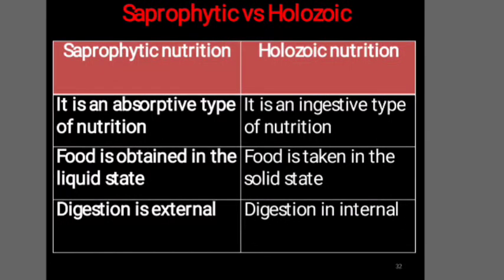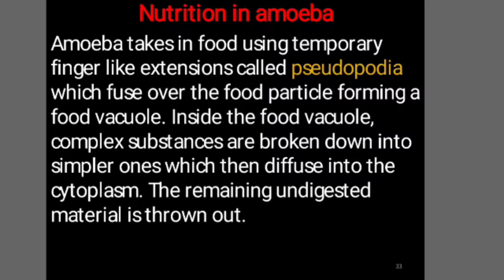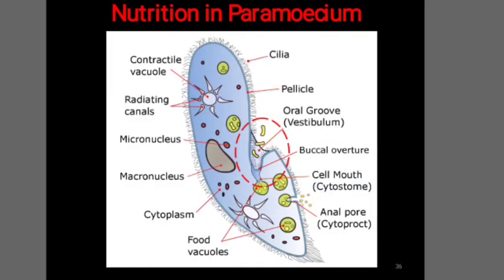You can see the difference between saprophytic and holozoic mode of nutrition. Nutrition in amoeba takes place with the help of pseudopodia, which fuse over the food particle forming a food vacuole. Inside the food vacuole, complex substances are broken down into simpler ones which then diffuse into the cytoplasm. The remaining undigested material is thrown out. In paramecium, which is a unicellular organism, the cell has a definite shape and food is taken in at a specific spot, moved there by the movement of cilia covering the entire surface of the cell.